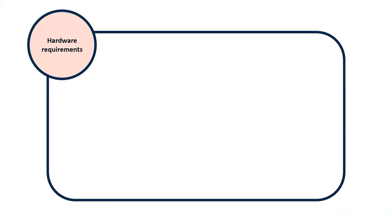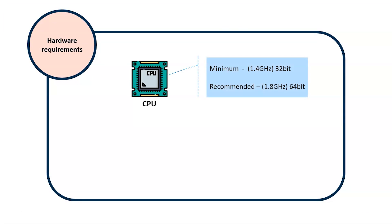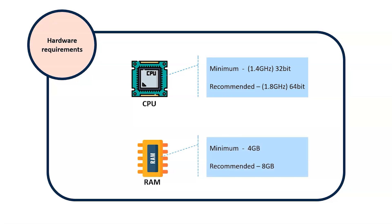We will first look at the hardware requirements. The CPU should at least have a processor of 1.4 GHz 32-bit configuration, or it is recommended to have a 1.8 GHz 64-bit configuration. The device is recommended to have a RAM of 8 GB, if not at least a minimum of 4 GB.